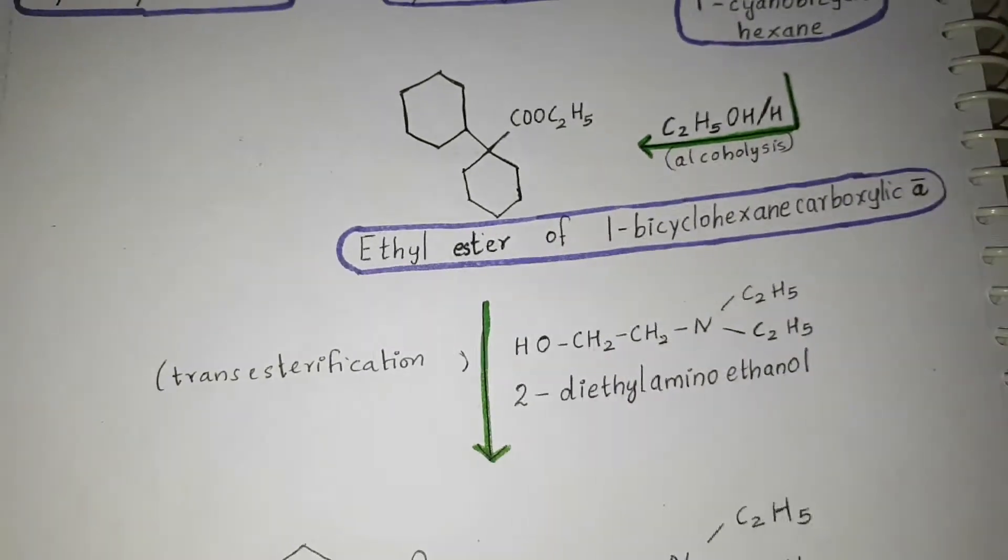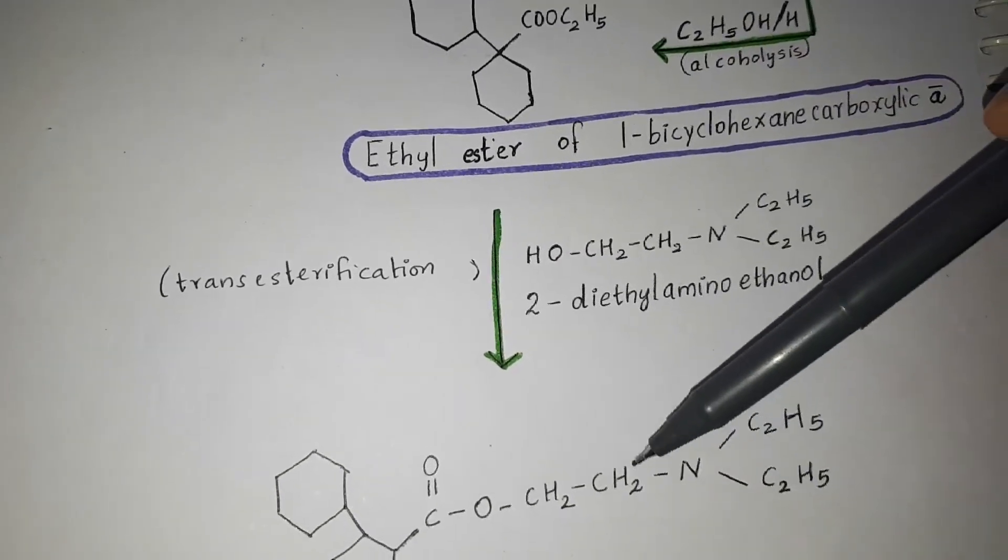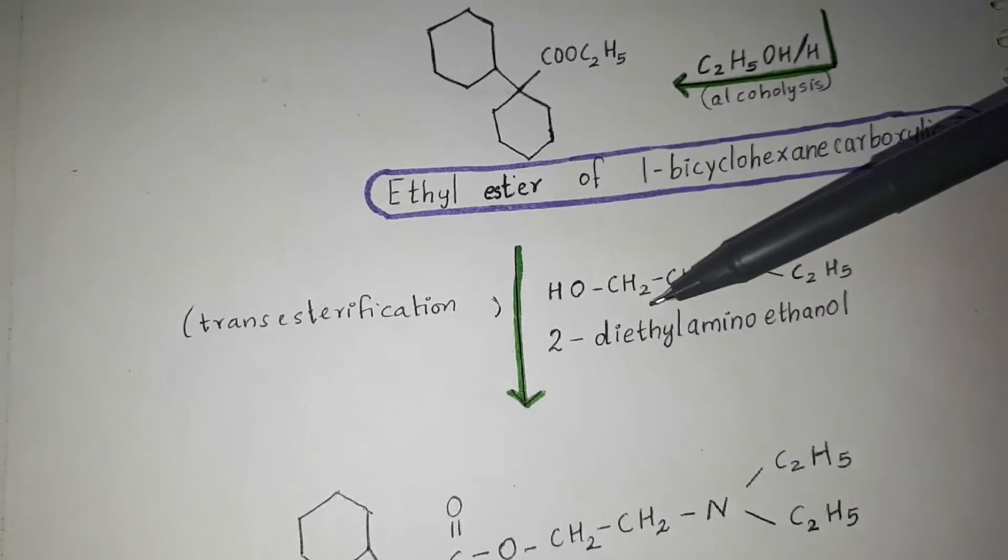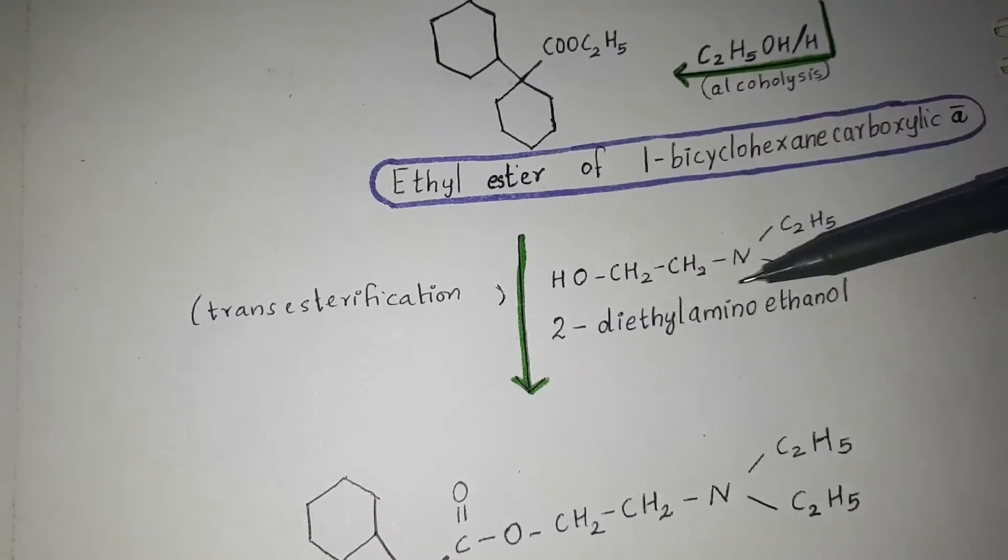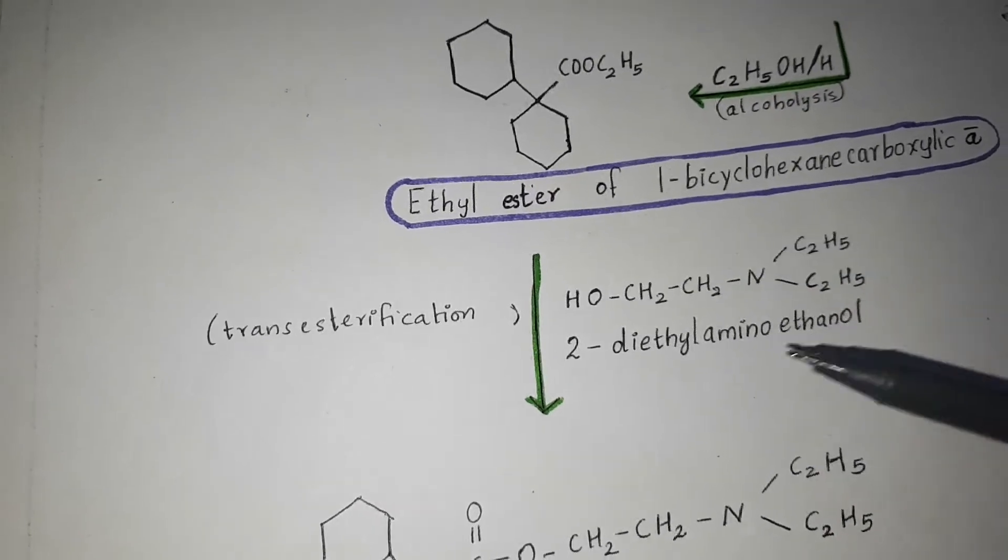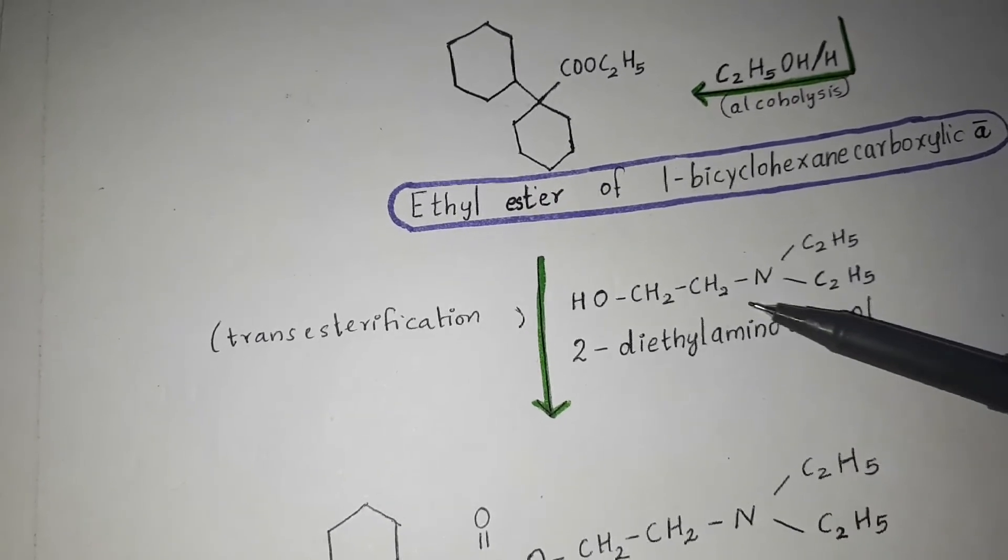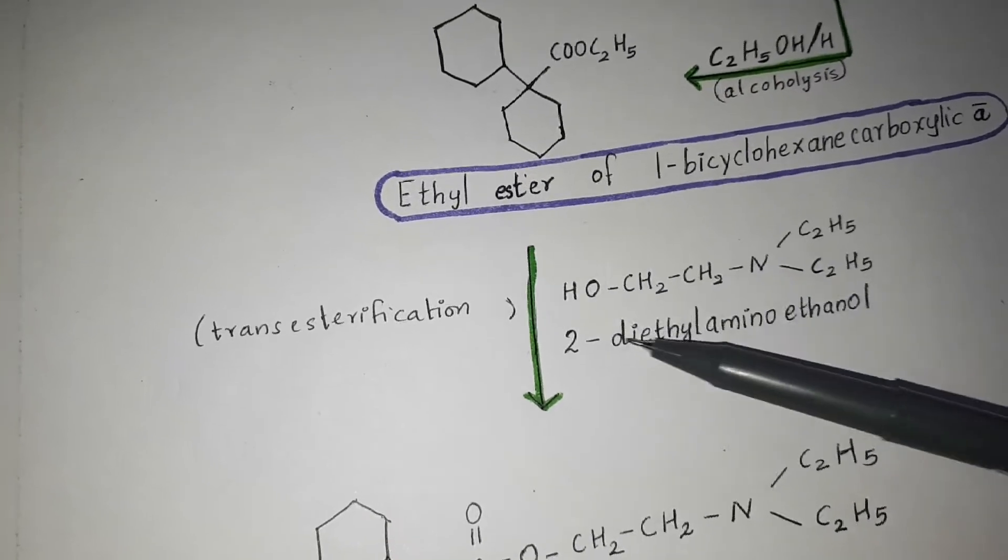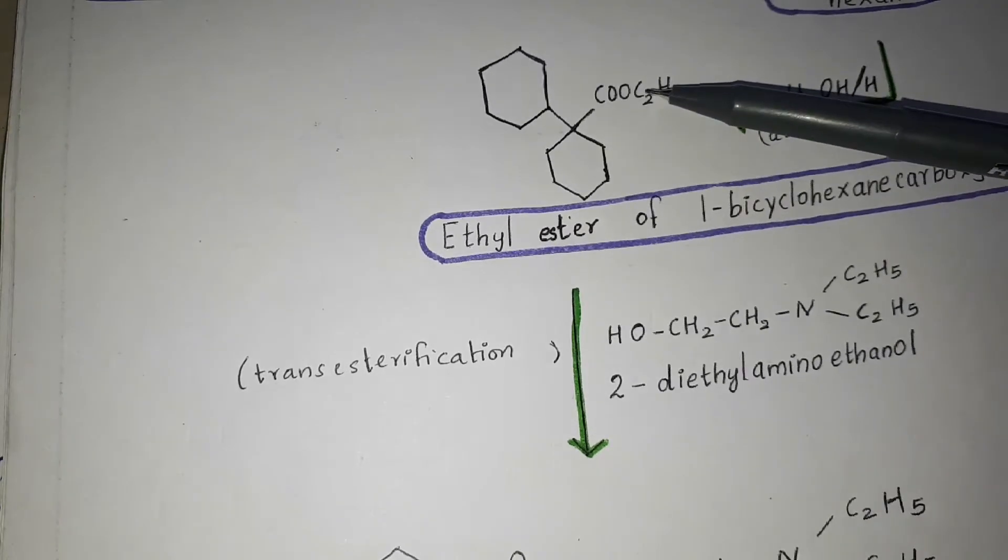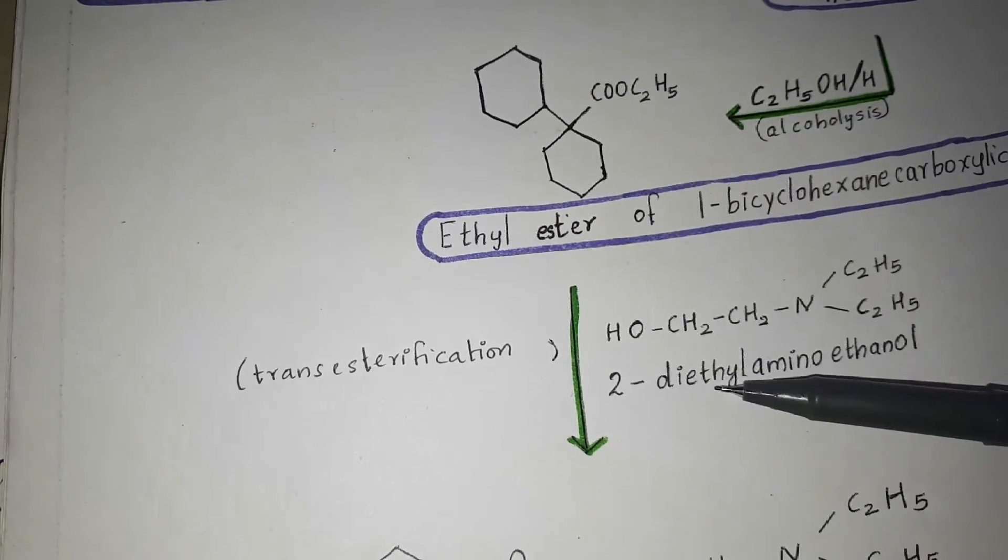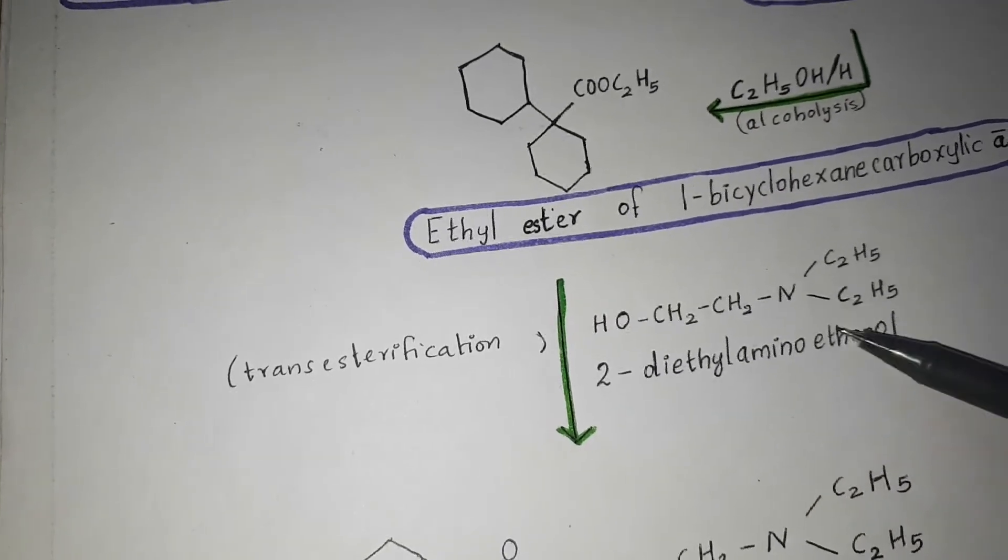Transesterification is the exchange of this group with the group of this alcohol, so this gets replaced with this whole thing. This is 2-diethylaminoethanol. The rest is ethanol, so this is an alcohol and this ethyl group is replaced with the R-group of alcohol.